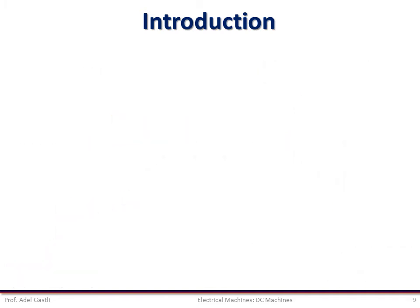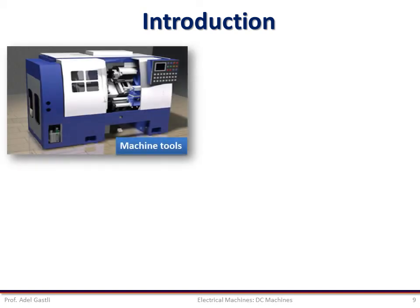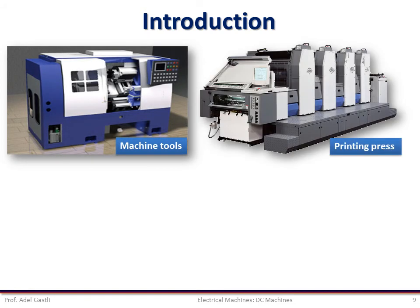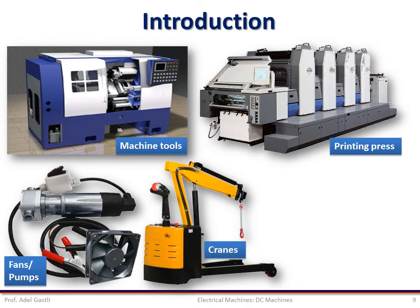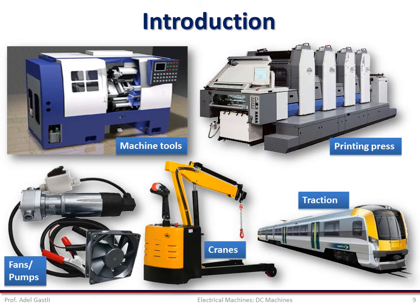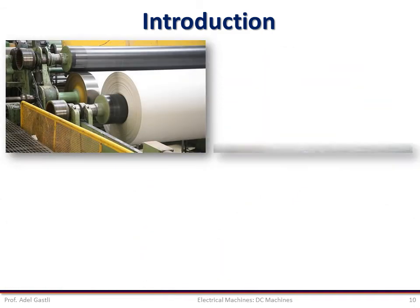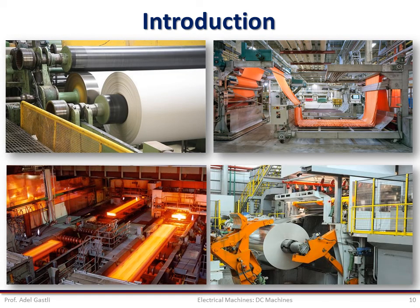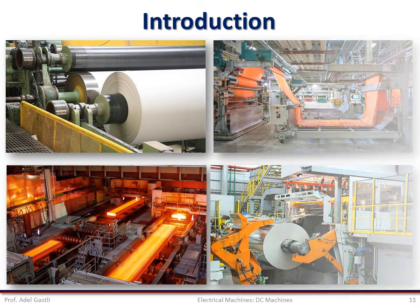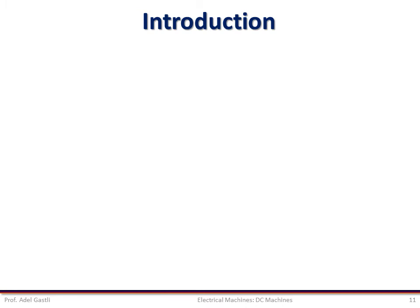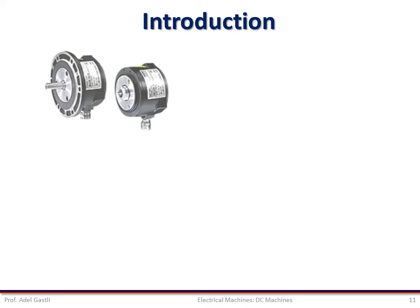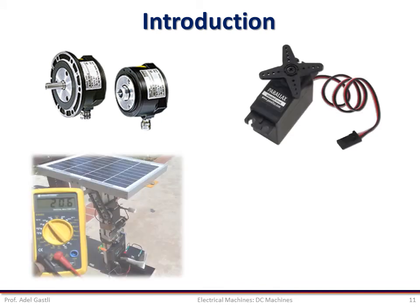Large DC motors are used in machine tools, printing presses, fans and pumps, cranes, traction, paper mills, textile mills, steel mills, aluminium mills and so forth. Small DC machines with fractional horsepower rating are used primarily as control devices, such as tacho generators for speed sensing and servo motors for positioning and tracking.